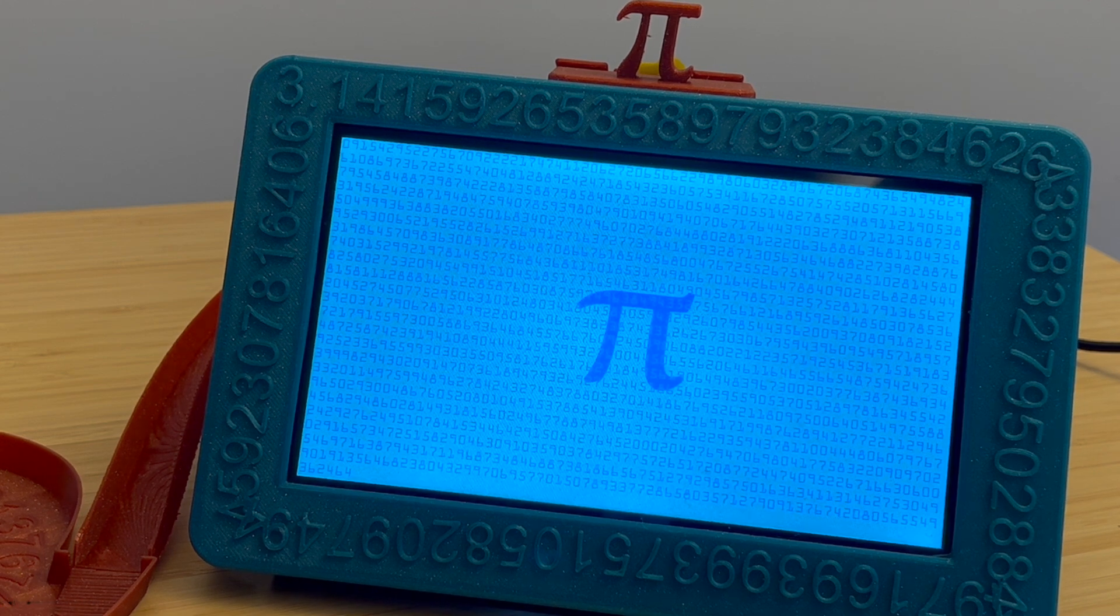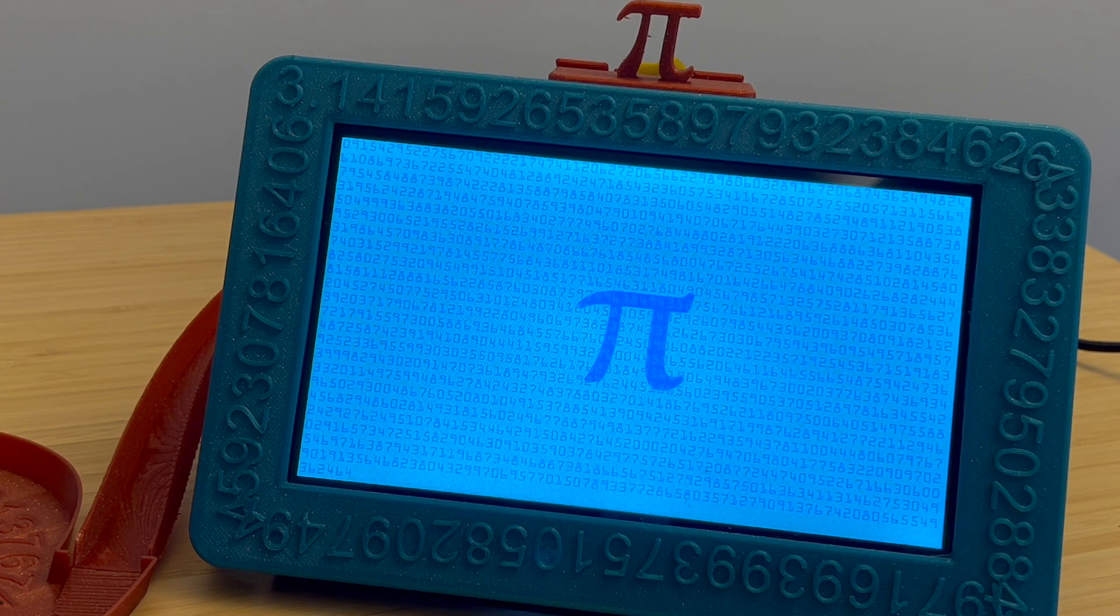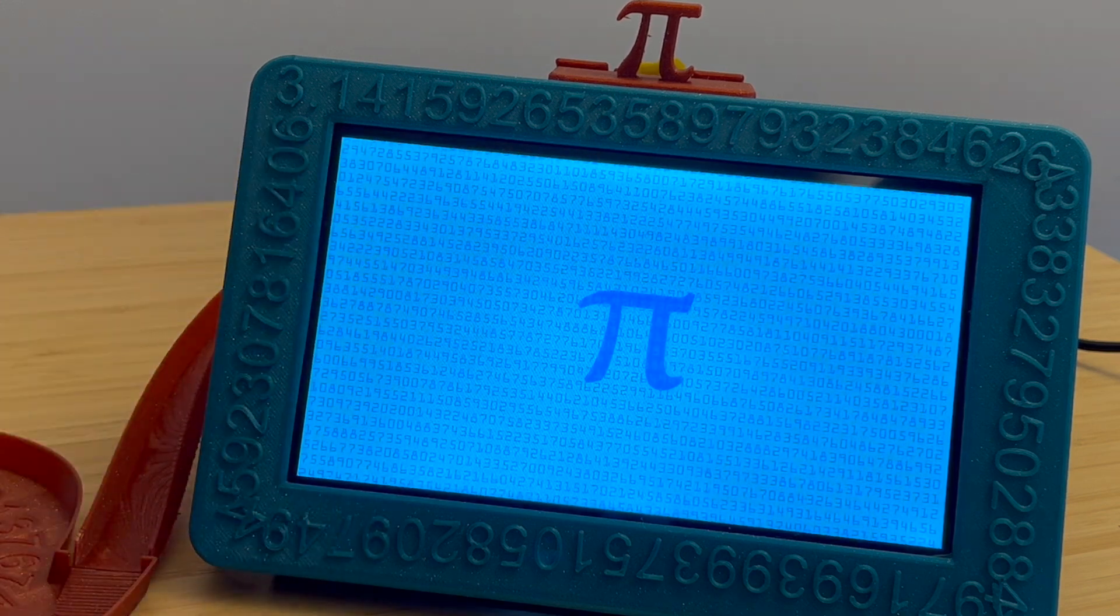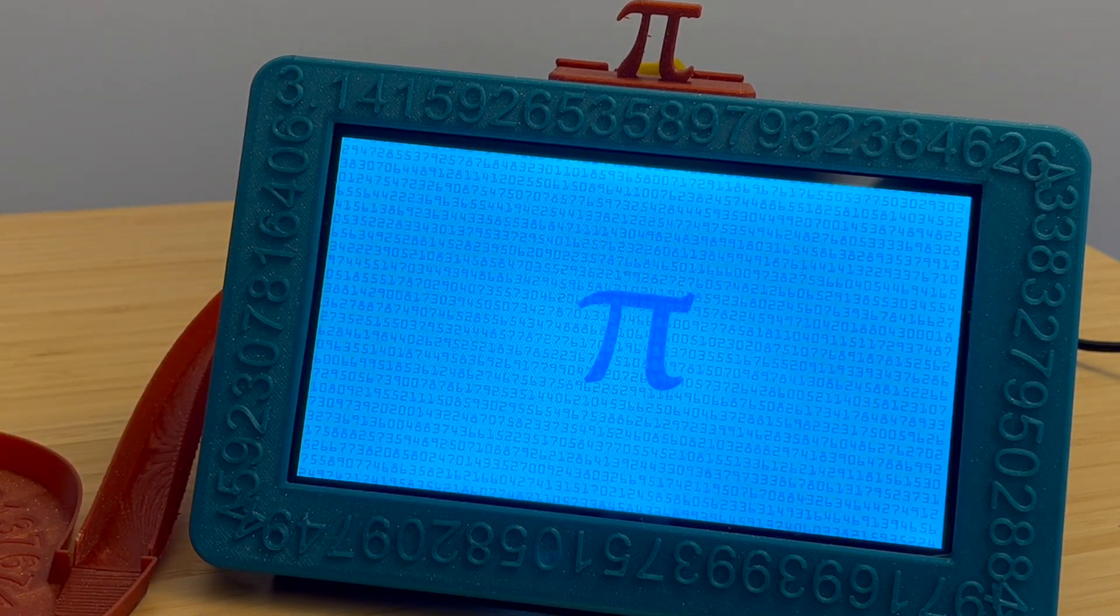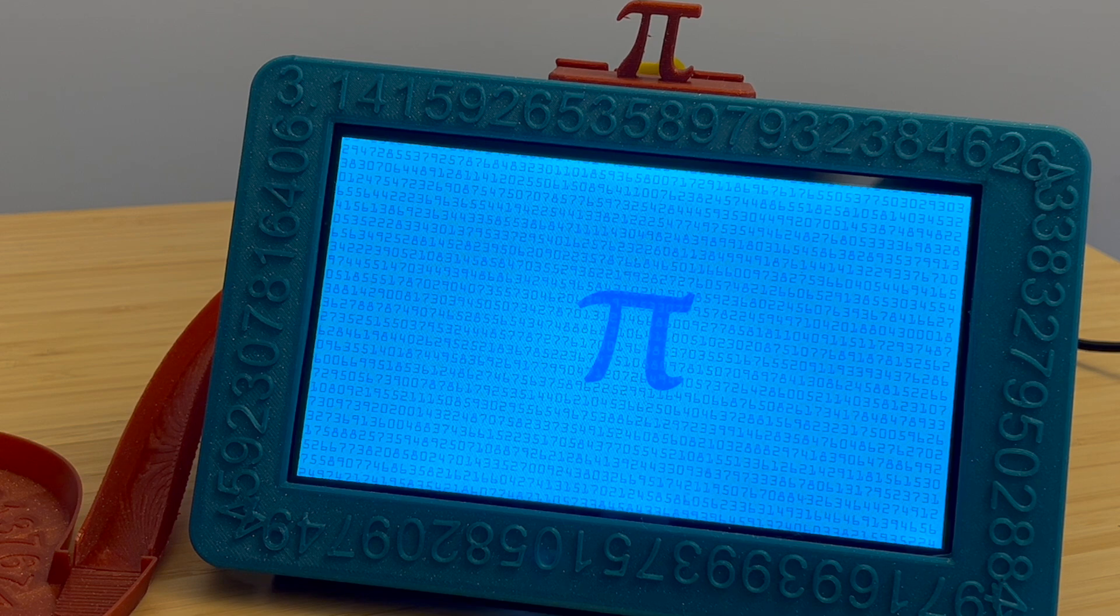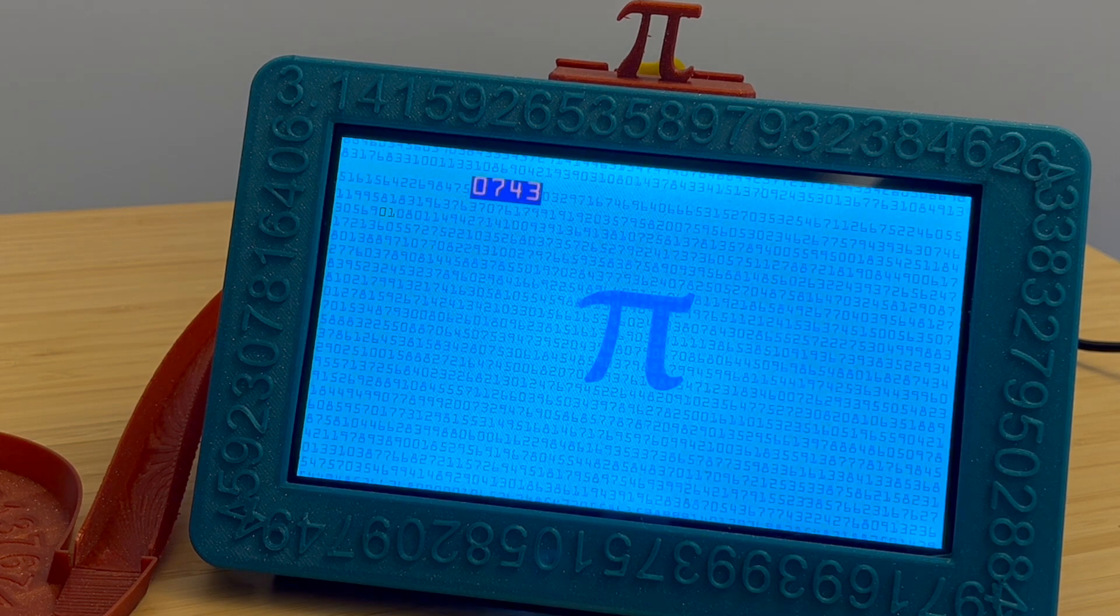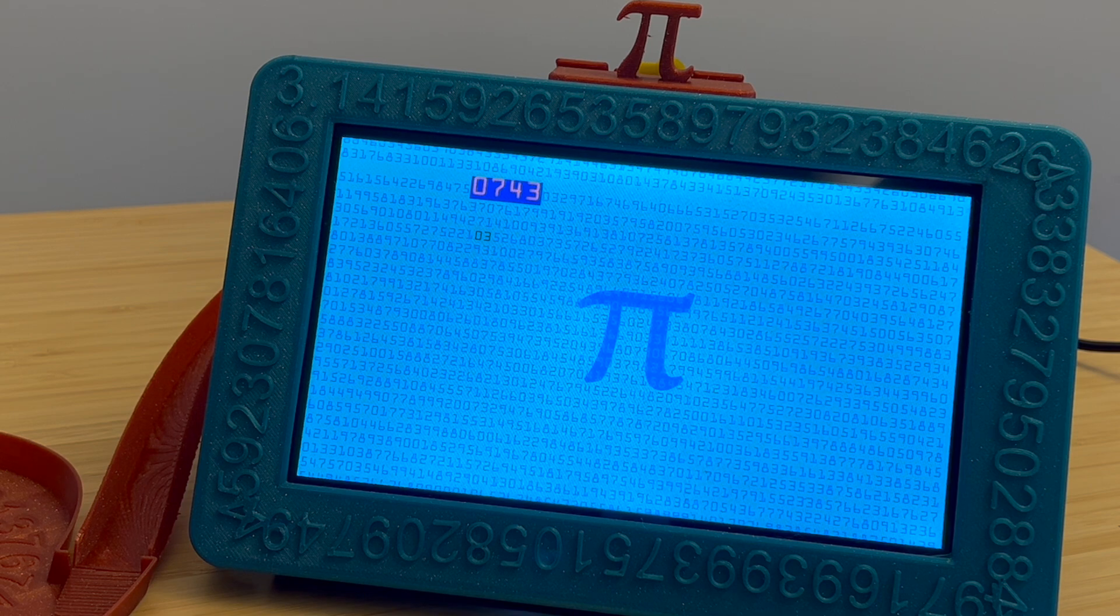This Pi clock does support both 24-hour time and 12-hour time. It supports both, so you can show it. Right now it's 7:43 p.m.